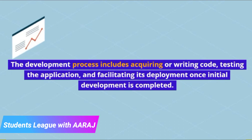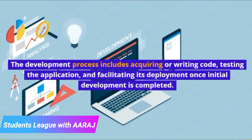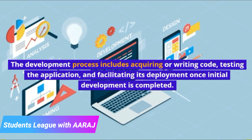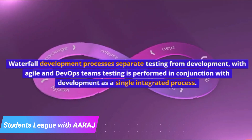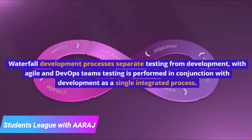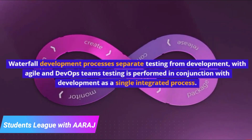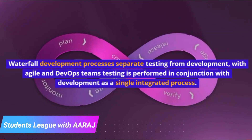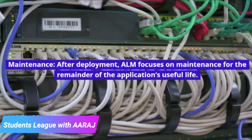The development process includes acquiring or writing code, testing the application, and facilitating its deployment once initial development is completed. Waterfall development processes separate testing from development, whereas with agile and DevOps teams, testing is performed in conjunction with development as a single integrated process.